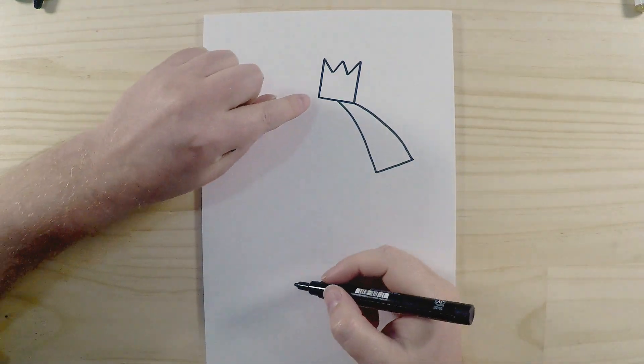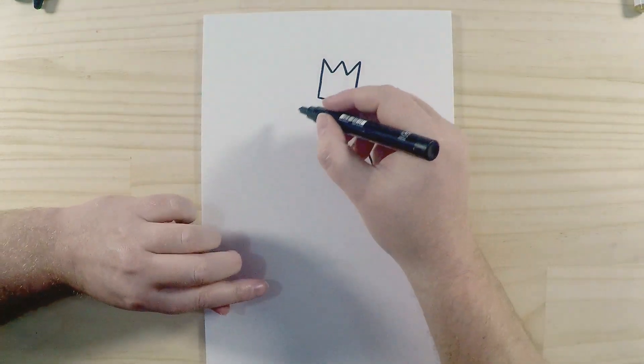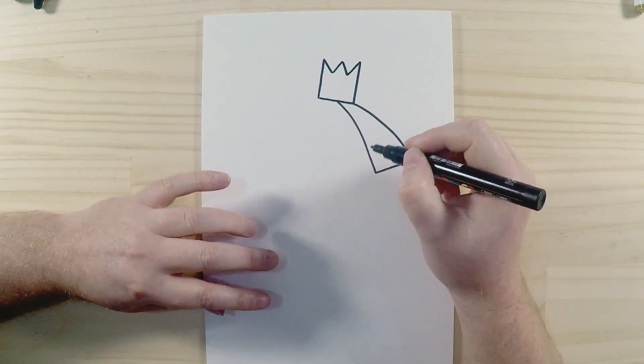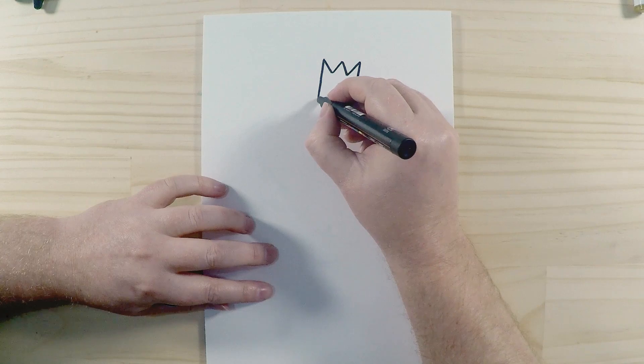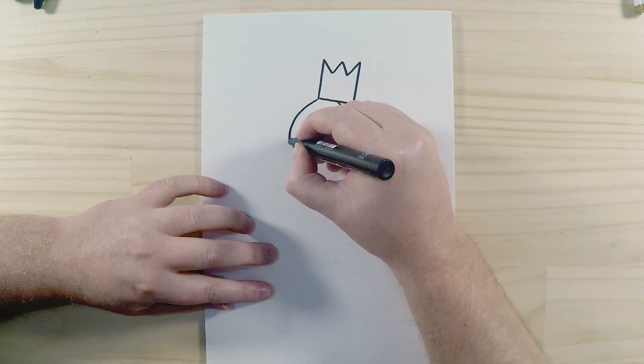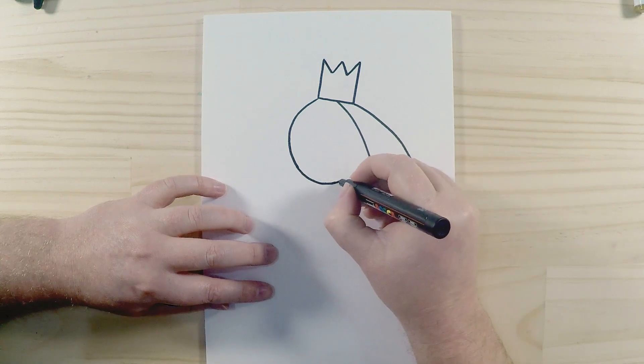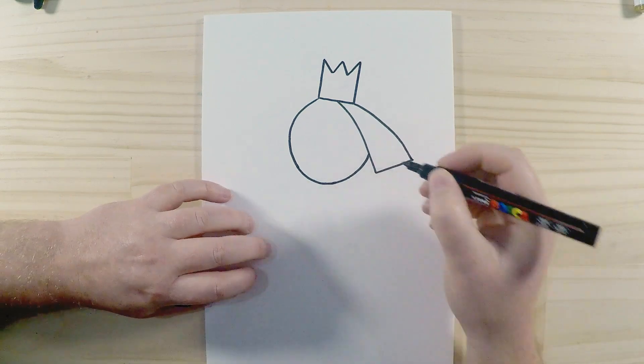Okay, so before we do hair on the other side, we're actually going to draw her face, so the shape of her head, sorry. Her head is a quite round shape like this, and we just keep going around. That joins up there.